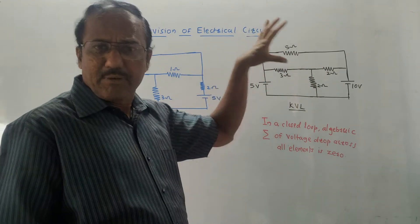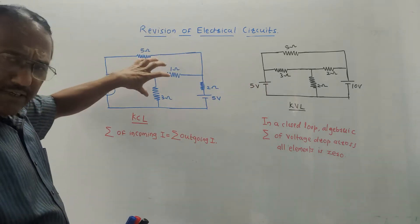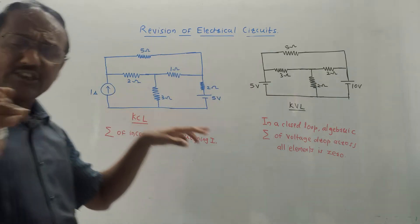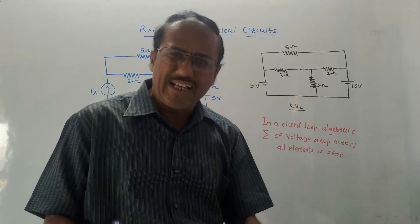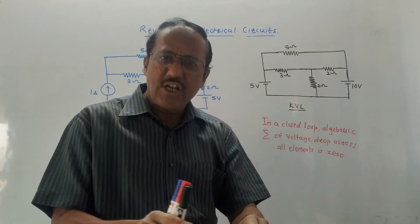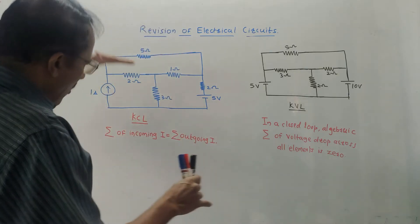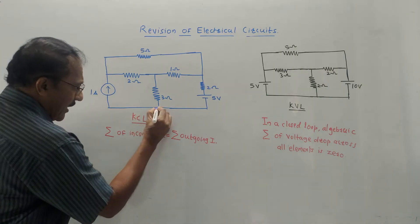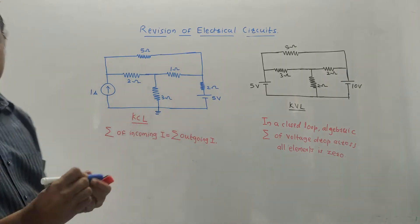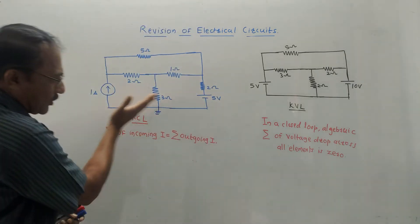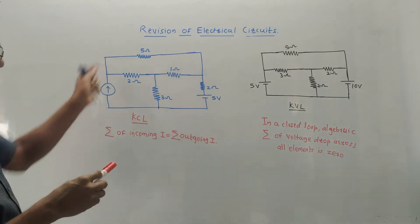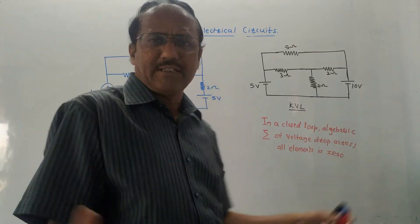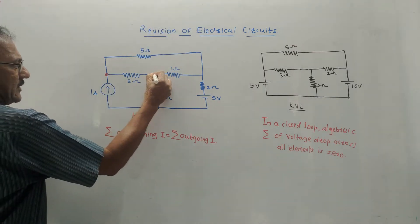The first topic is network simplification technique. I will explain the simplest technique to apply KCL as well as KVL. First we will discuss KCL, which stands for Kirchhoff's current law. It is also known as node analysis. A node is a junction where different branches are connected. Almost in all numericals, this bottom line is considered to be grounded. So we can identify the nodes: this is node one, this is node two, this is node three.